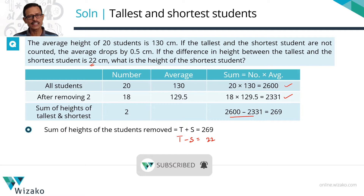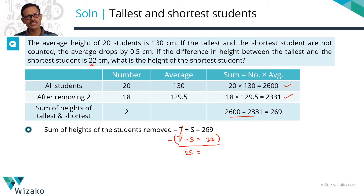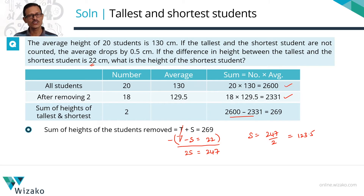What do we have to find out? We need to find the height of the shortest student — the value of s. So subtract the second equation from the first one. When you do that, t gets cancelled; s minus negative s leaves us with 2s. This equals 269 minus 22, which is equal to 247. So the height of the shortest student equals 247 divided by 2, which is equal to 123.5 cm.